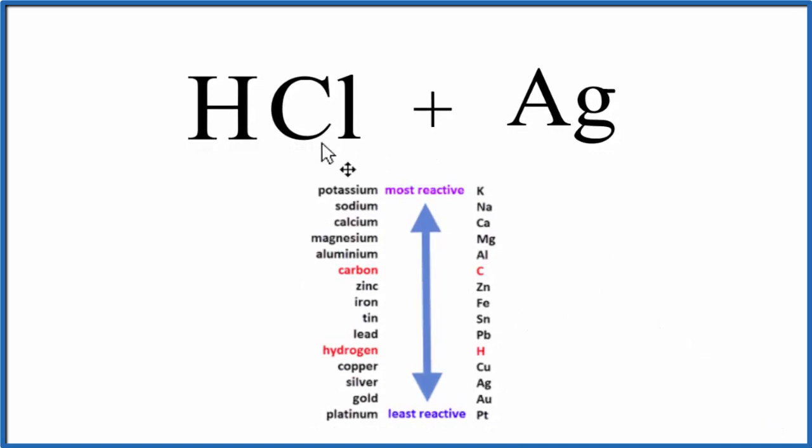When we look at the activity series for the metals, we have a list of different metals. The most reactive are at the top. The least reactive are at the bottom. So as we go down our list, we find hydrogen, and then below it, we have silver.